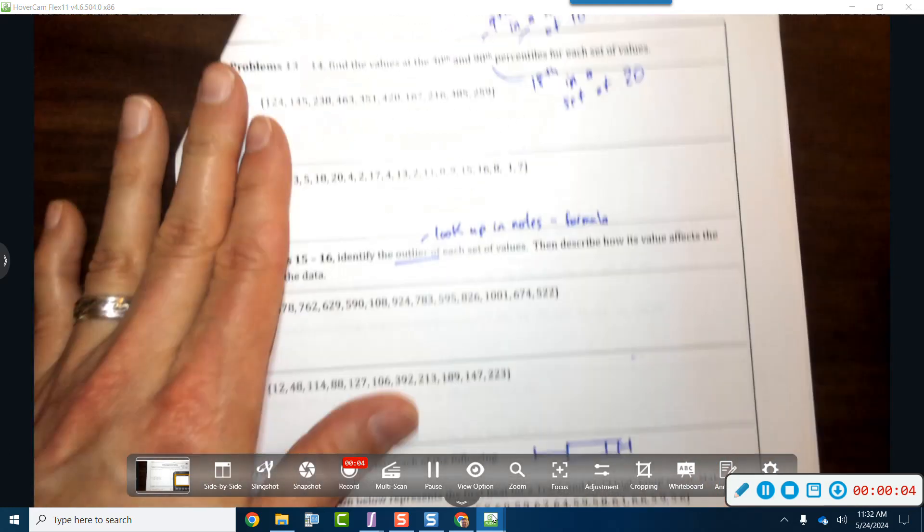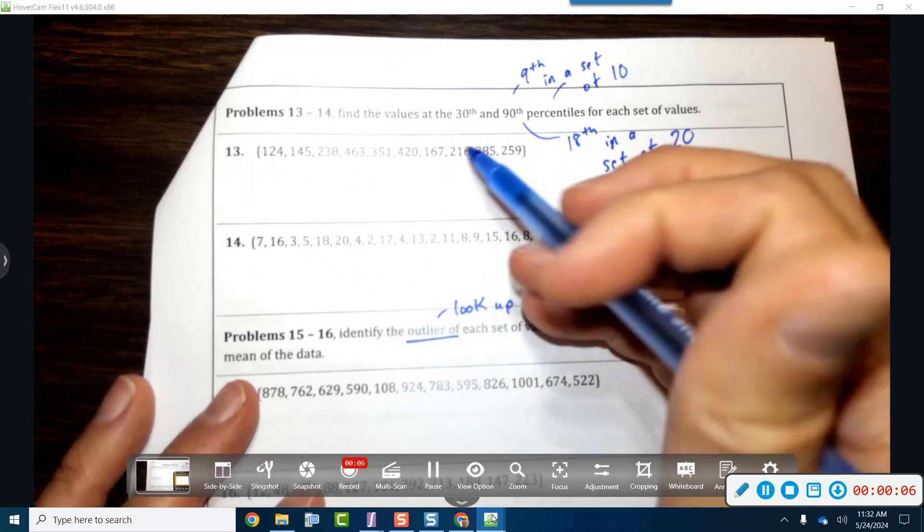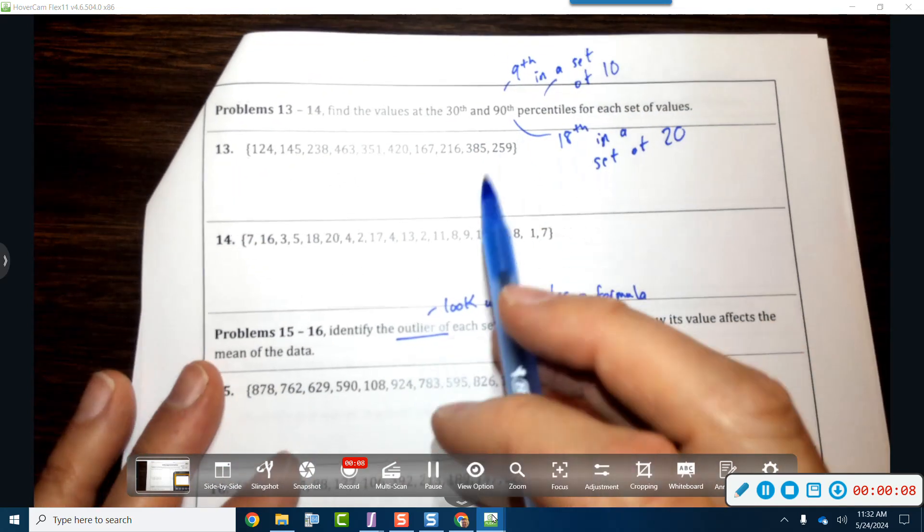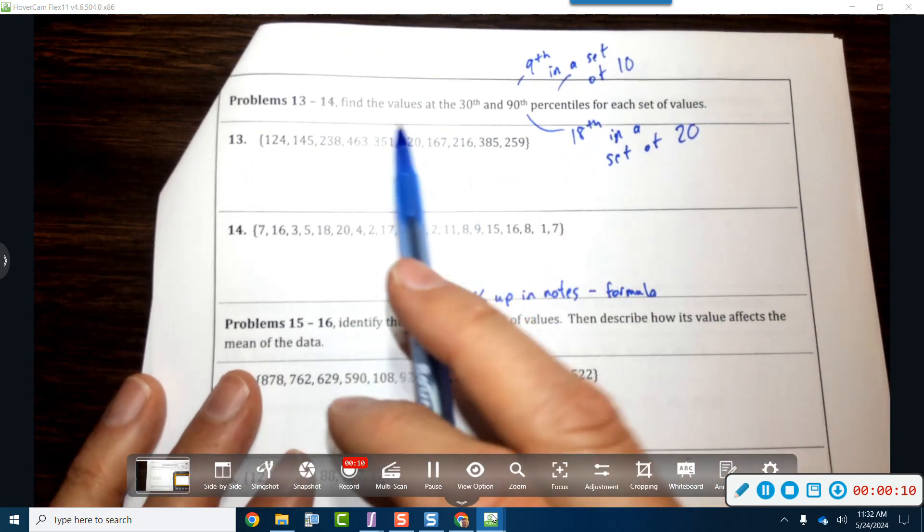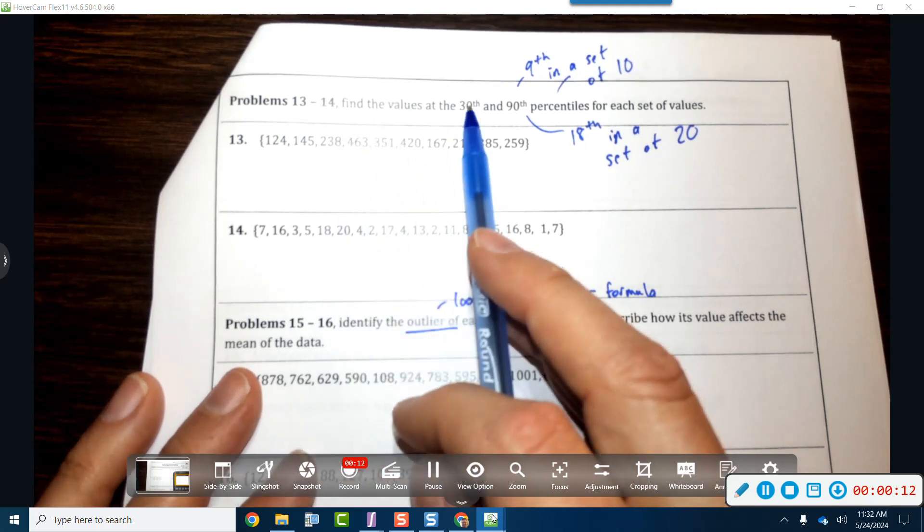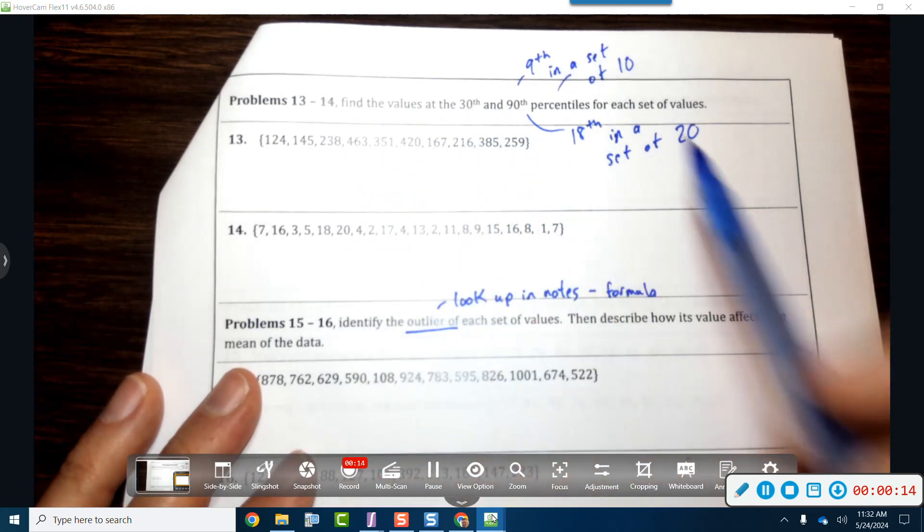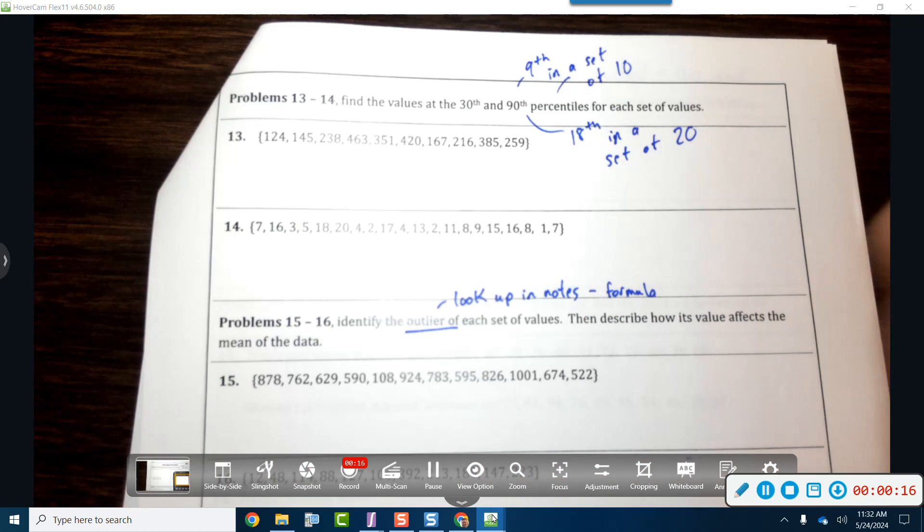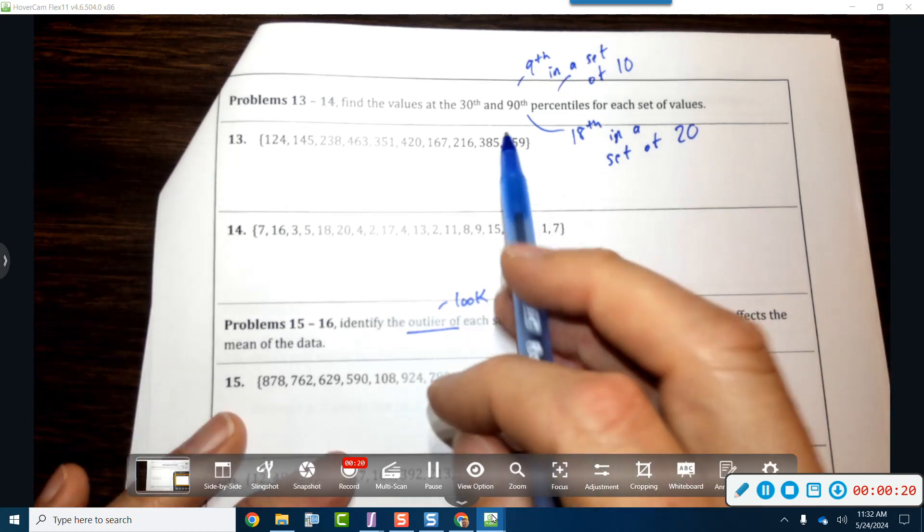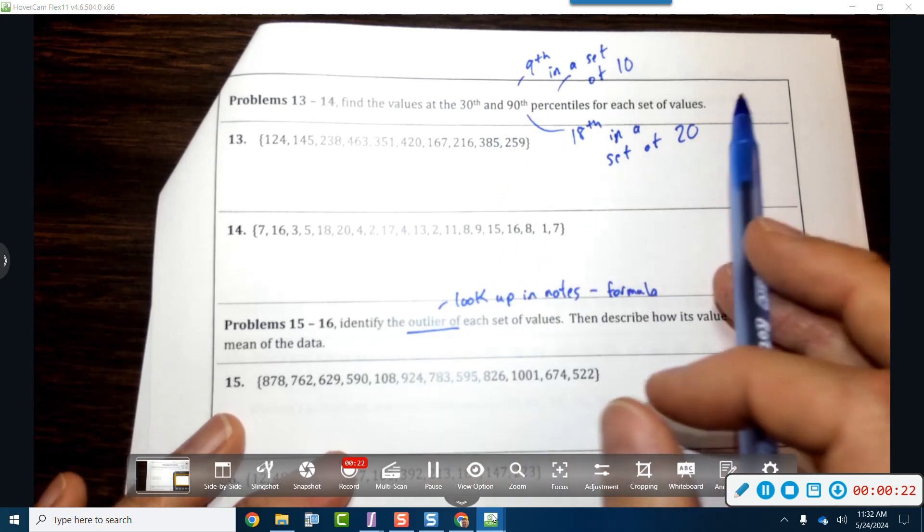All right, so for percentiles we didn't actually do a worksheet on this. This will actually probably be an extra credit question. But when they talk about the 30th and 90th percentiles, they're trying to figure out where in your data 90% of your data is there or above.